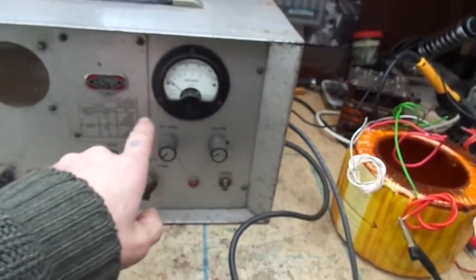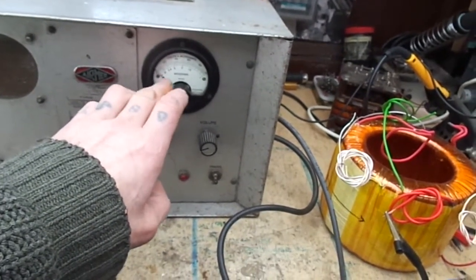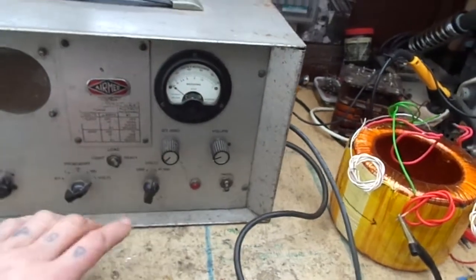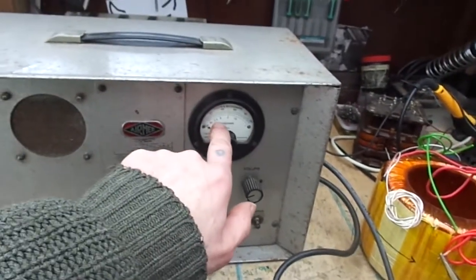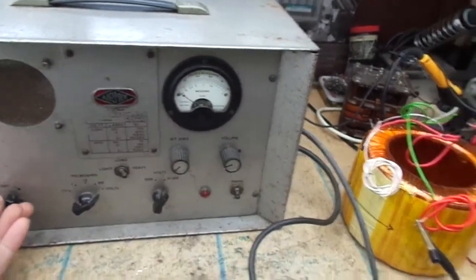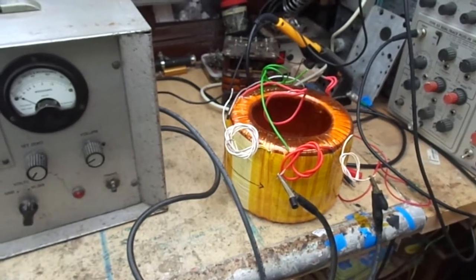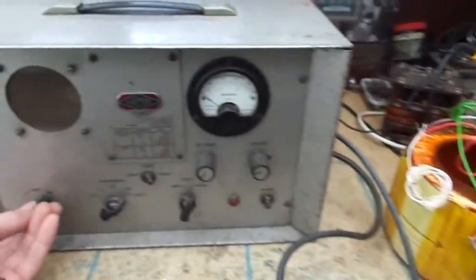We're testing the primary-secondary insulation on this big toroid. I tested it up to a thousand volts, tested the insulation, and it works out at about 500 megohms. I think I've got that right. Basically read 5 off here, times it by 100.